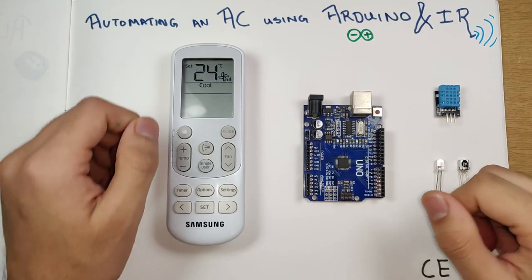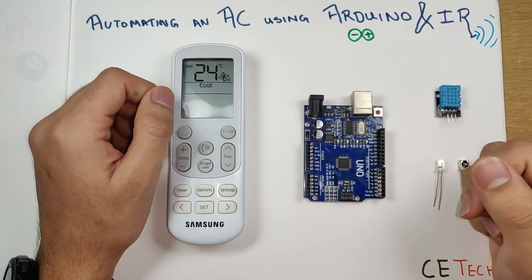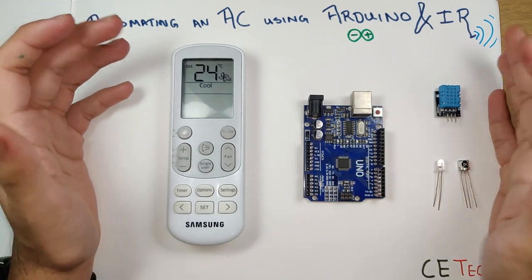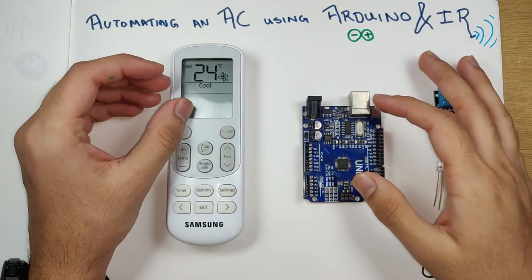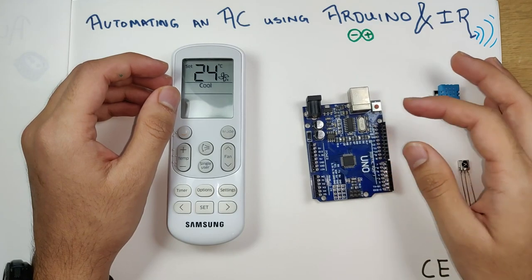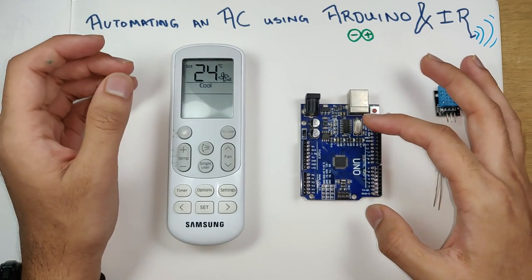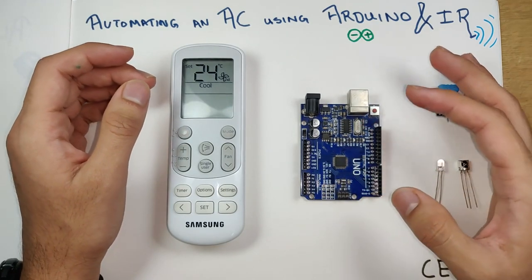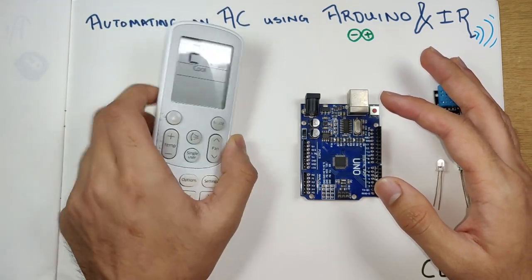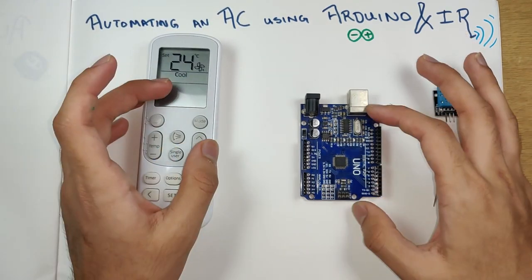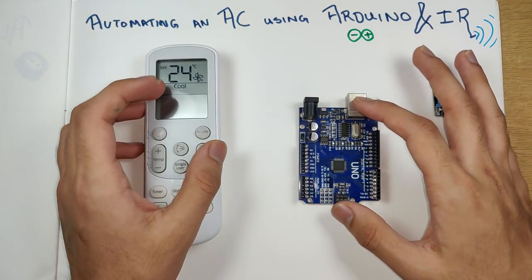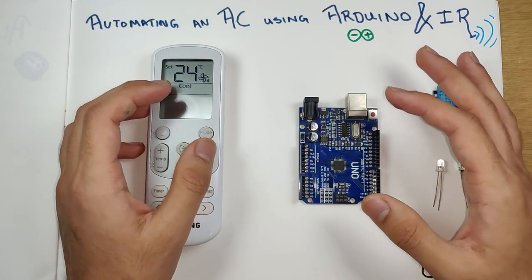Hey, what is up guys, Akarsh here back with another video. Today I'll be building a long-held project I thought of when I had an older AC. I had this problem where sometimes it used to get too cold, sometimes too hot, so I constantly had to play with my remote to perfectly adjust the temperature of my room by switching the AC on and off.